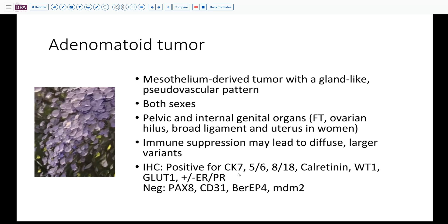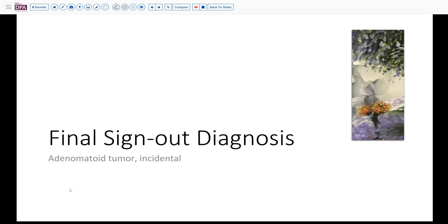The immunohistochemistry is positive for lots of cytokeratins, calretinin, WT1, and also GLUT1. These can be variably hormonally positive to a weak degree, but usually negative for Pax8 and vascular markers, as well as other markers of liposarcomatous-type lesions or adenocarcinomas. Our final sign-out diagnosis: an incidental adenomatoid tumor occurring in the uterine corpus, certainly unrelated to and not affecting the patient's staging or further therapy.